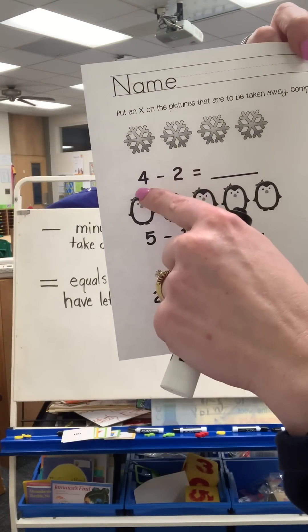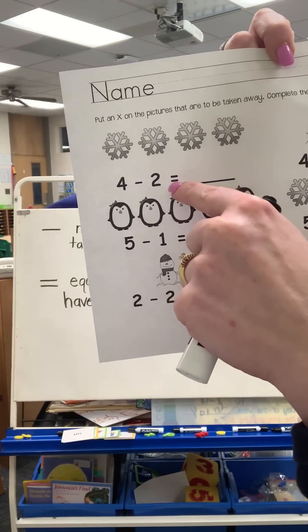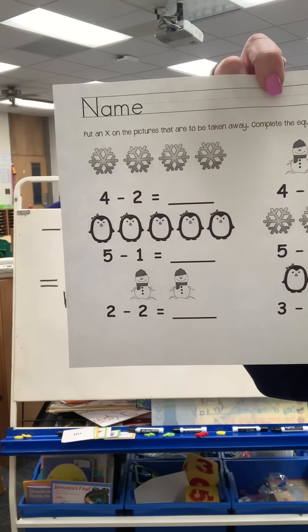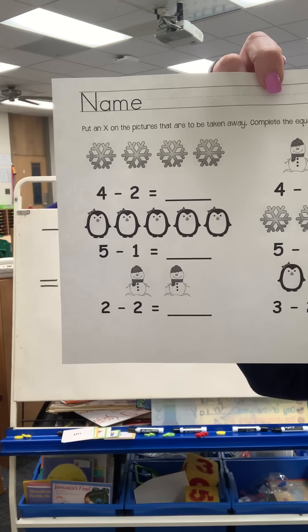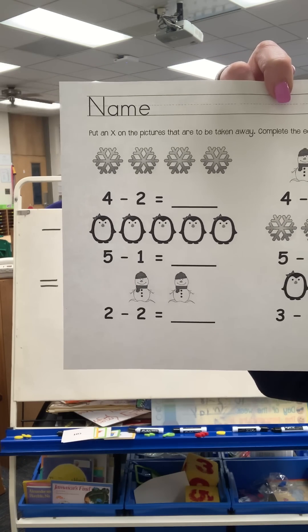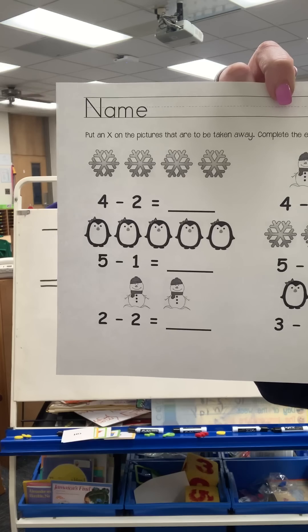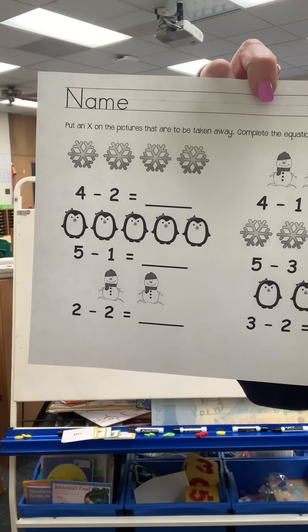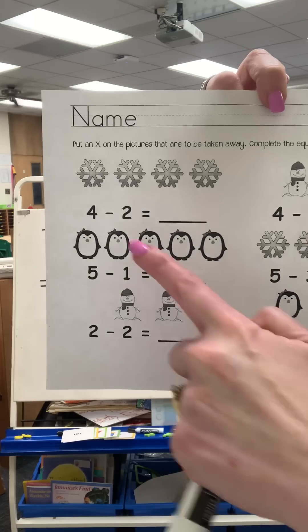The first one says four minus two equals, what should I do? I should put X's. Where am I going to put the X's? Right, on the snowflakes. How many snowflakes get X's?